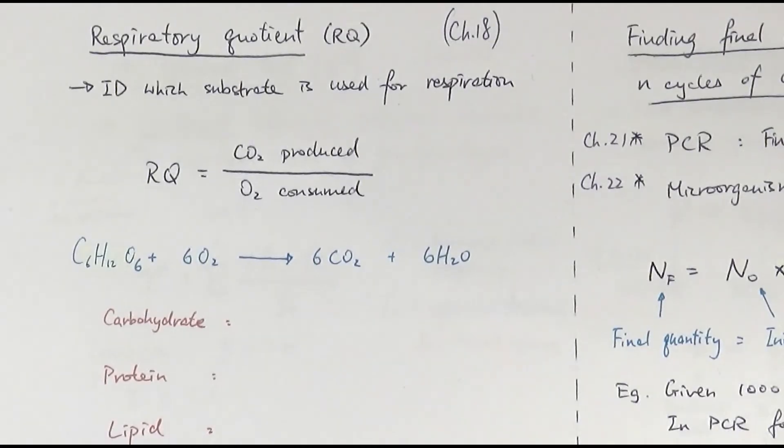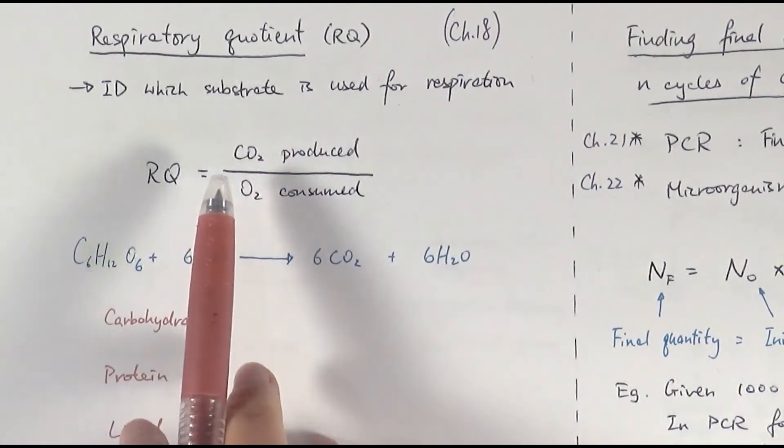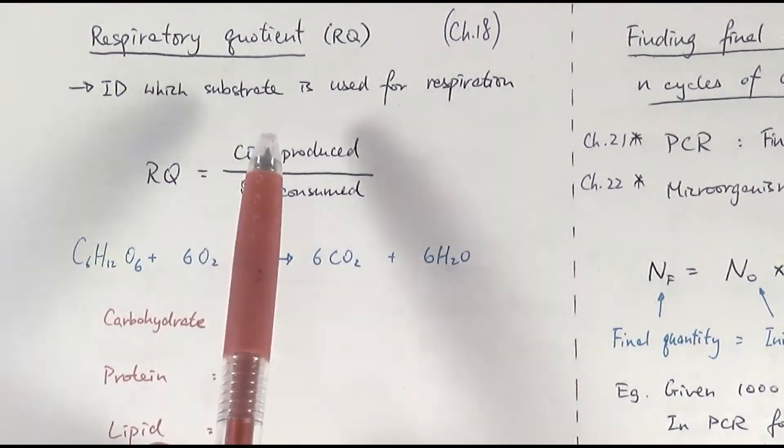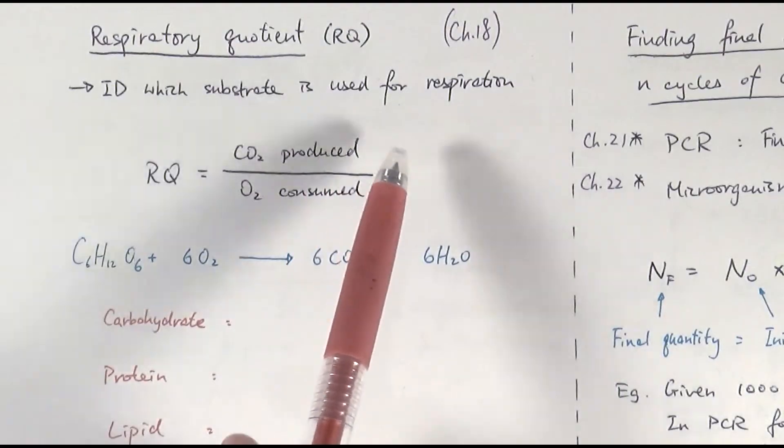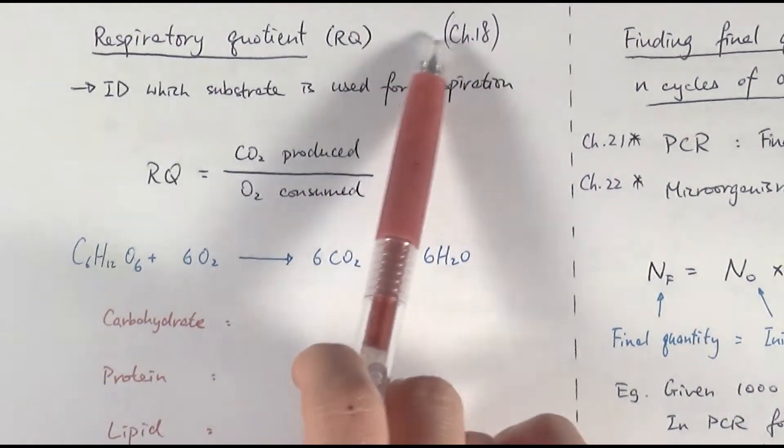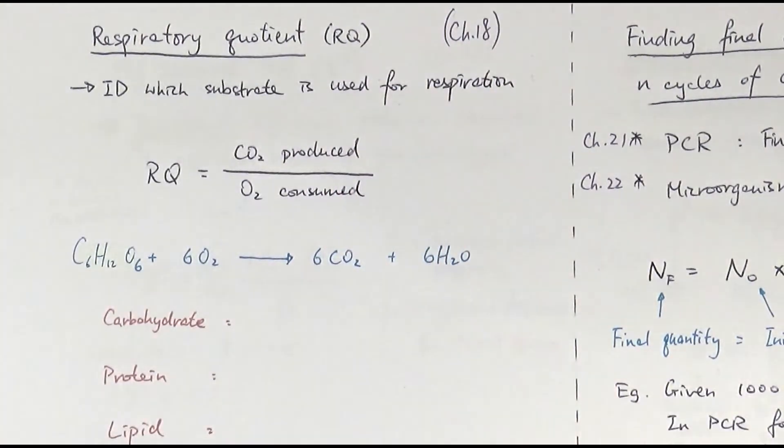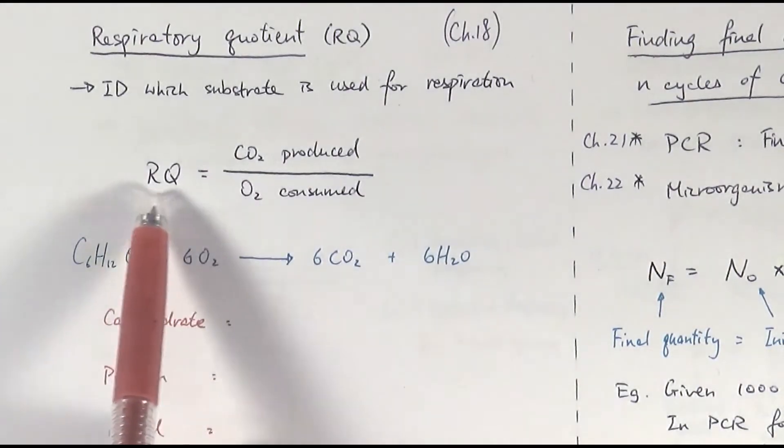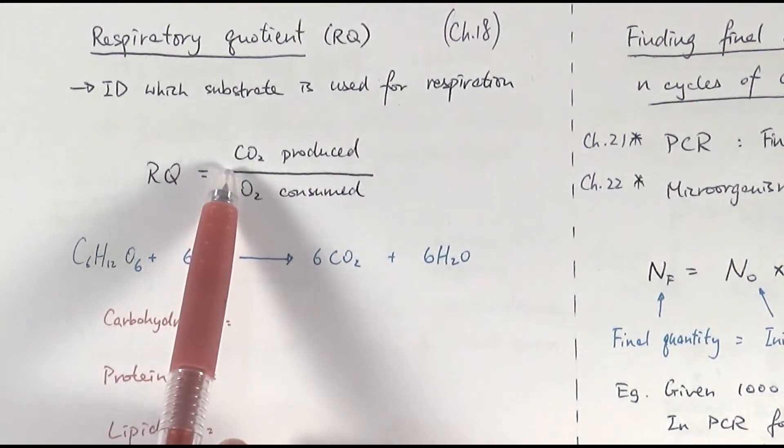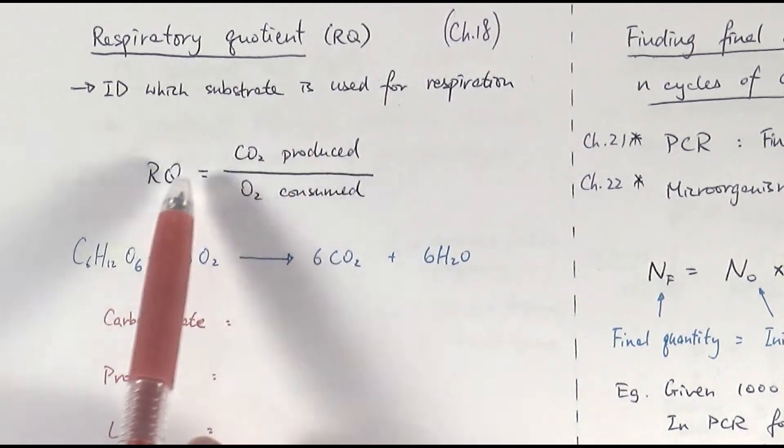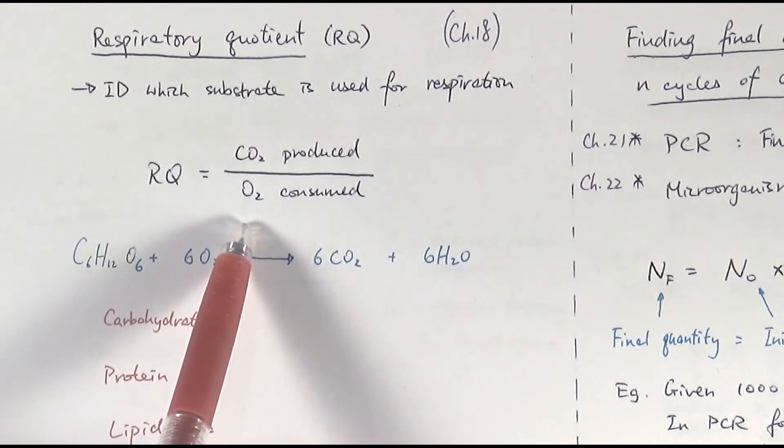So first of all, let's look at respiratory quotient. We can use different respiratory substrates to do aerobic respiration. It depends entirely what was available at that point. And the reason why we do the respiratory quotient calculation is to identify which substrate it is that is used in respiration. Specifically, you might refer to this in chapter 18. The equation would be RQ, respiratory quotient, equals the amount of carbon dioxide produced divided by the amount of oxygen produced.